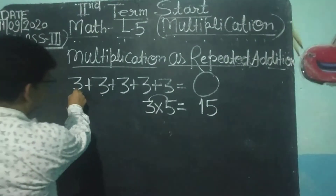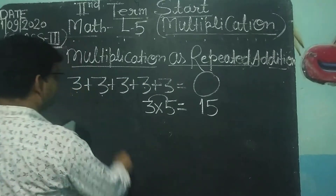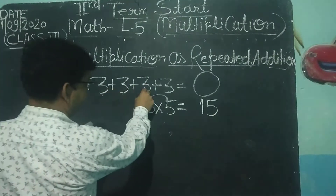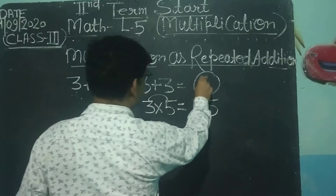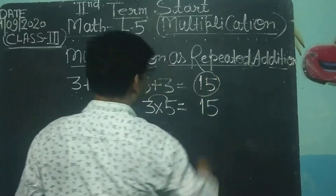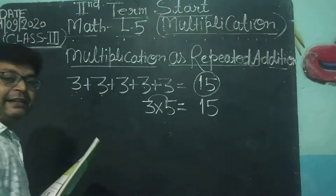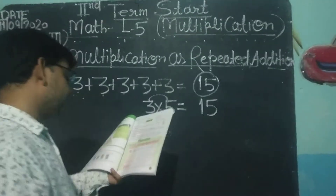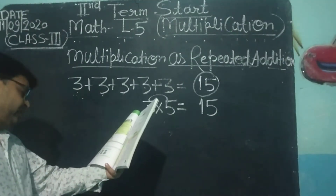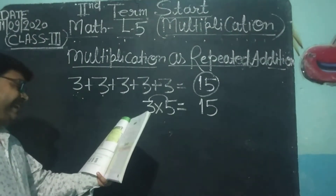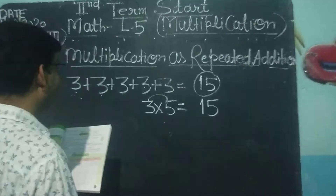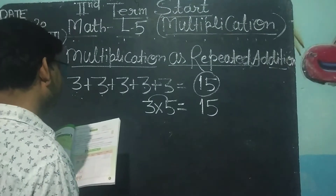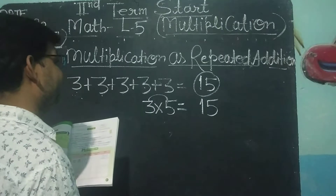और यदि हम add करके इसका result रखेंगे — 3, 6, 9, 12, 15 — तभी आपका result same आए, चाहे वो addition से लो या multiplication से। इस तरीके से यह method है, इसको हम repeated addition कहते हैं।